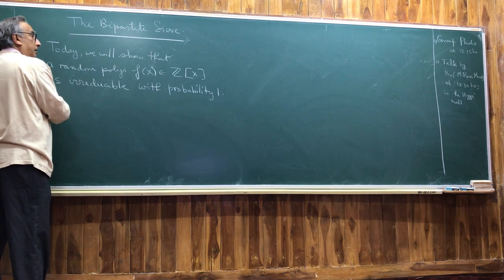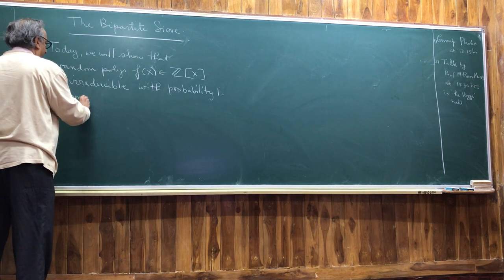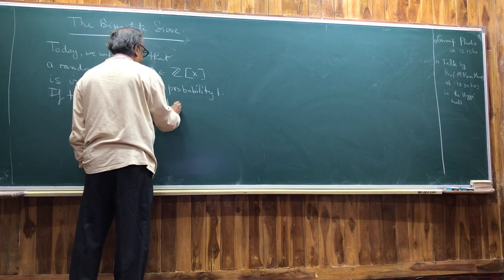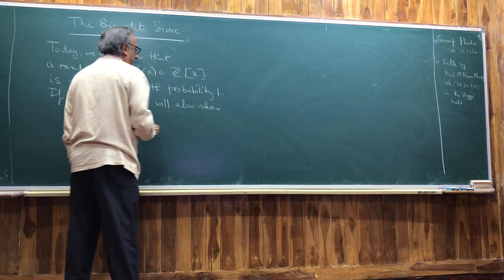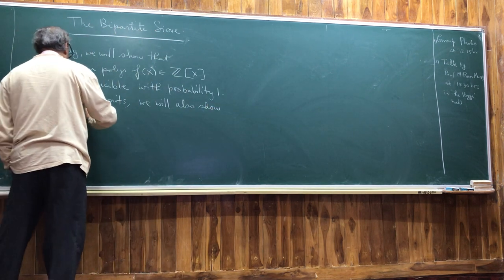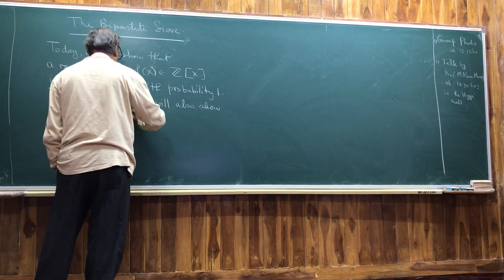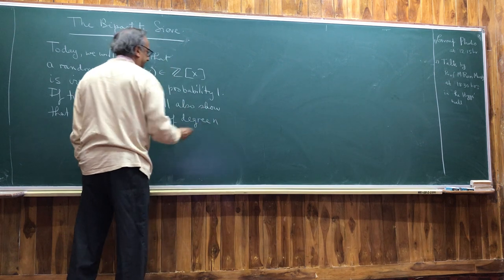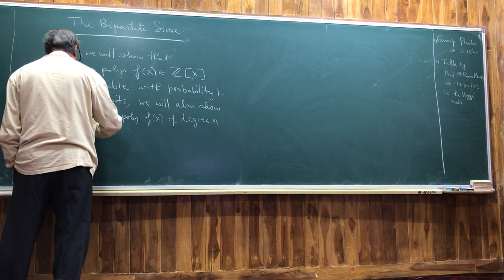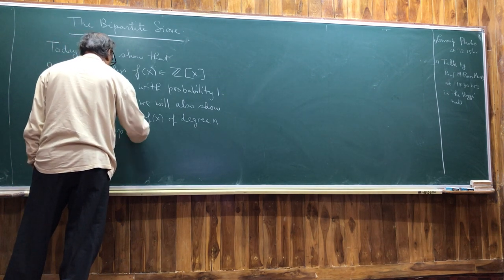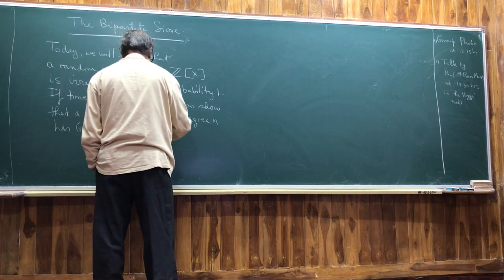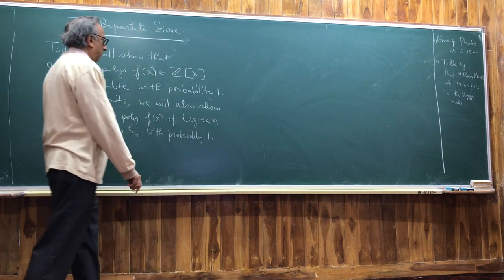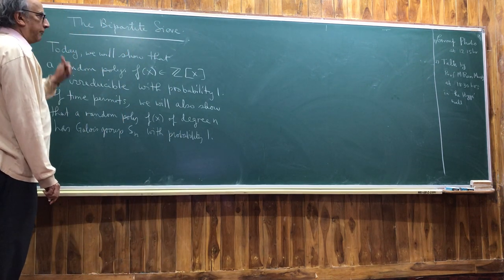If time permits, we can also show that a random polynomial f(x) of degree m has Galois group S_n with probability 1. Both of these results will come out of what I call the bipartite sieve.